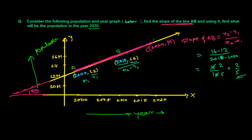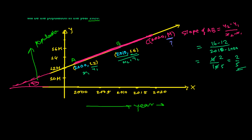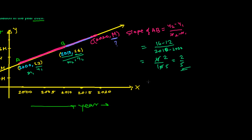Now we need to find out the population in the year 2020. What is the value of M? So what I'm going to do, I'm going to write the slope of BC. So what is the slope of BC? Let's write here, in the side, slope of BC.